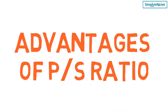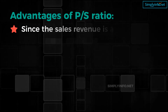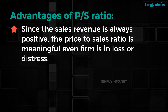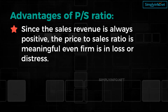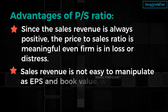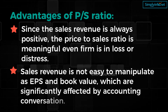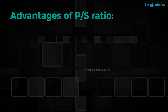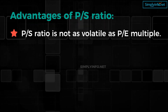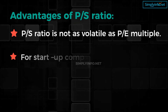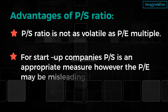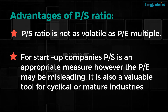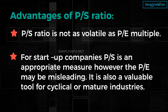Let's look into the advantages. Since the sales revenue is always positive, the price-to-sales ratio is meaningful even when a firm is in loss or distress. Sales revenue is not easy to manipulate, unlike EPS and book value, which are significantly affected by accounting conventions. PS ratio is not as volatile as the PE multiple. For startup companies, PS is an appropriate measure; however, the PE may be misleading. It is also a valuable tool for cyclical or mature industries.